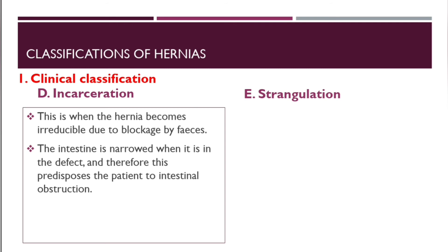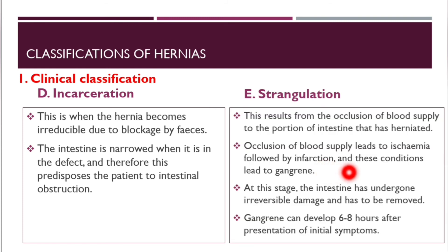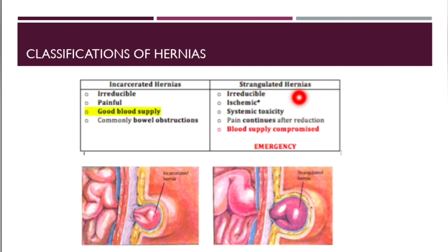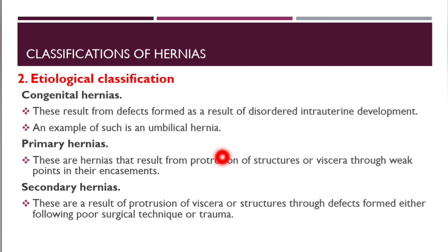A strangulated hernia results from occlusion of blood supply to the herniated portion of intestine. Occlusion of blood supply leads to ischemia, followed by infection, which can lead to gangrene. At this stage the intestine has undergone irreversible damage and must be removed. Gangrene can develop six to eight hours after the initial symptoms. In summary: an incarcerated hernia is irreducible and painful but blood supply is intact, mainly causing bowel obstruction; a strangulated hernia is also irreducible but ischemic, blood supply is compromised, associated with systemic toxicity, and pain continues even after reduction.